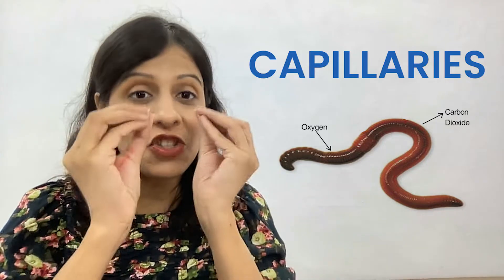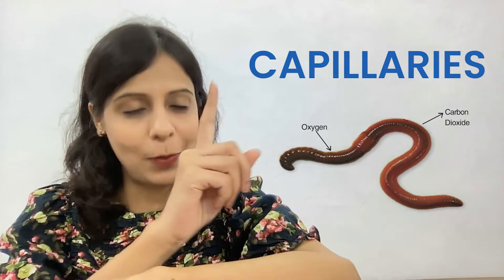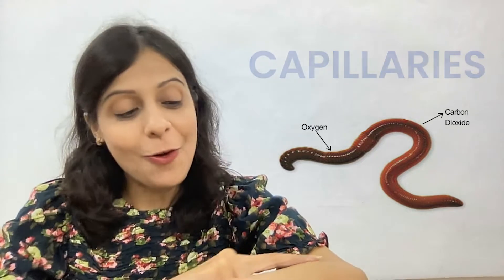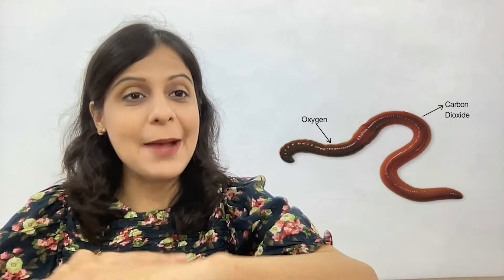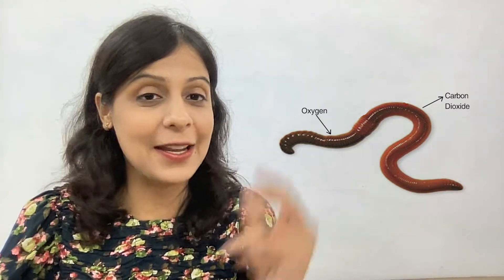Through the capillaries in their skin, oxygen binds with hemoglobin in the blood and is transported to the cells. The cells use the oxygen to release energy. Carbon dioxide is then released back out through the skin's capillaries.